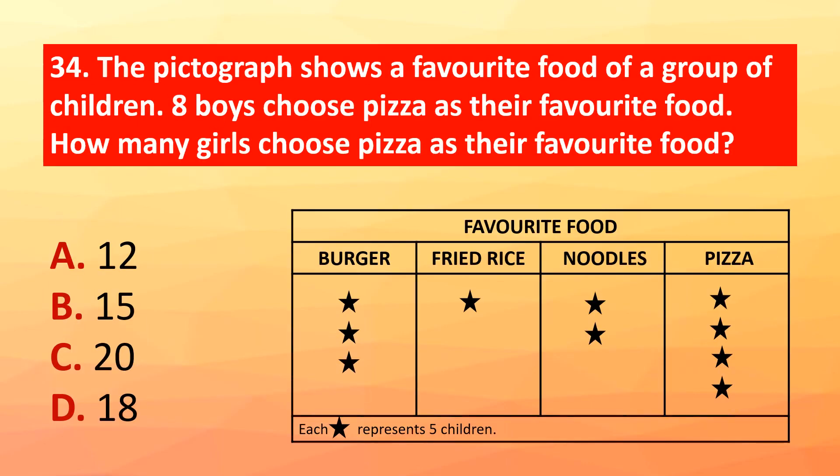Question 34: The pictograph shows the favorite food of a group of children. Eight boys chose pizza as their favorite food. How many girls chose pizza as their favorite food? The correct answer is option A: 12.